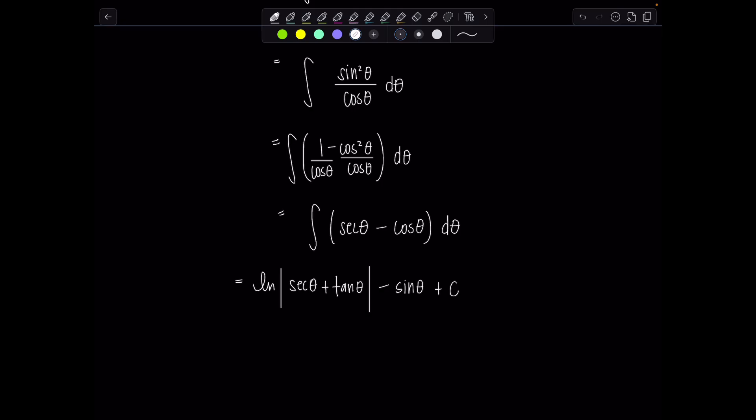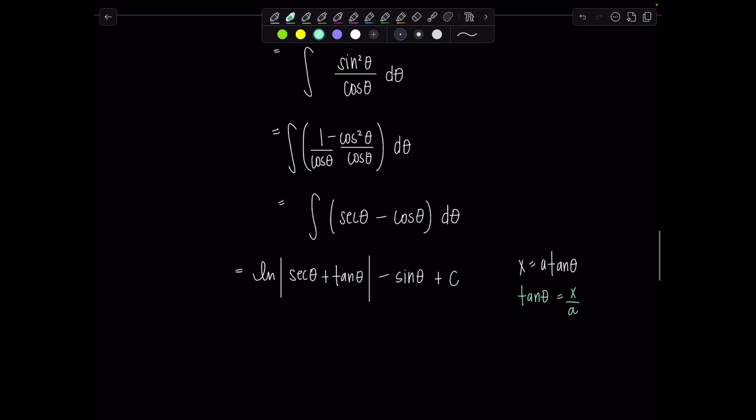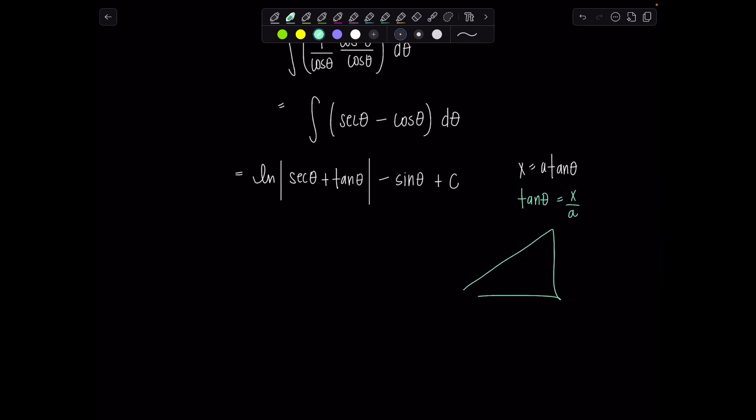Now we have to go back to the original variable of the problem. Everything was in terms of x remember and we chose to let x equal a tan theta. So it is triangle time. That means we're going to draw a triangle where tangent of theta is equal to x over a. So draw you a little triangle over here. Oh so cute. Hello triangle. Here's theta. Tangent is ratio of opposite over adjacent. Then the hypotenuse would be rad a squared plus x squared.